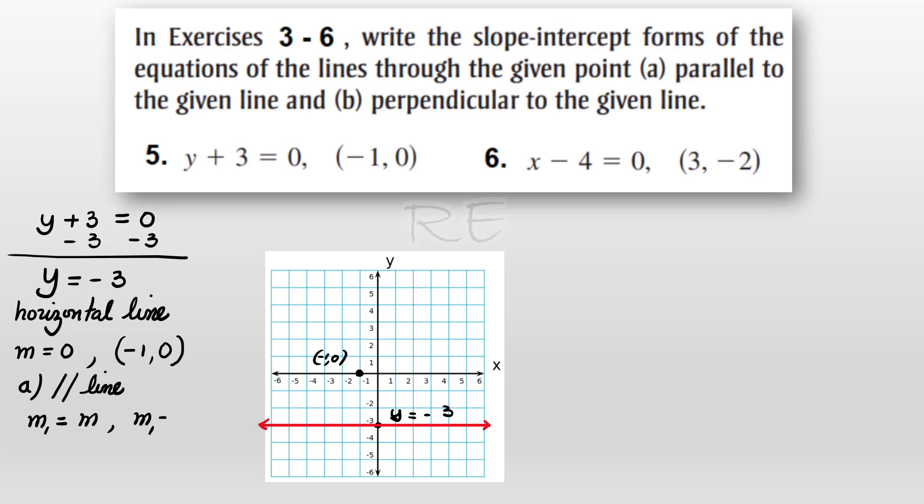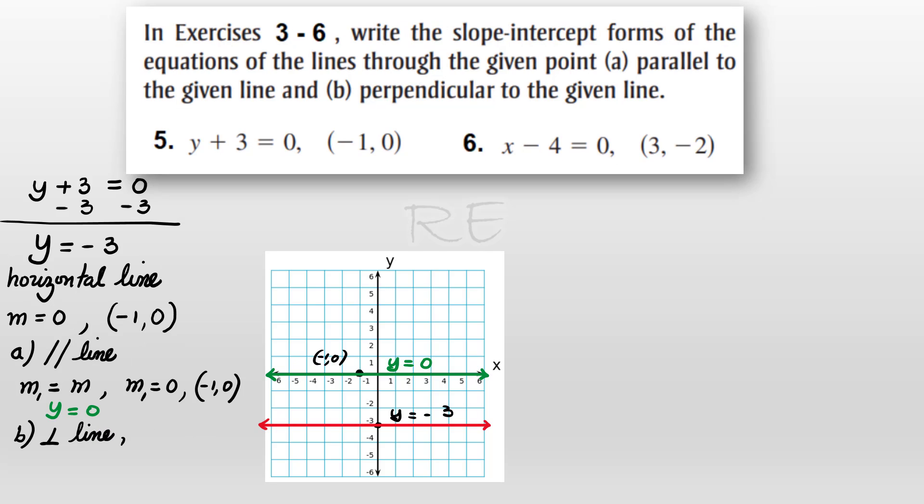Therefore, m1 will be equal to 0 and must go through the point negative 1, 0. Well, that parallel line is the line y equals 0, which is the x-axis, that goes through the point negative 1, 0, and has a slope of 0.